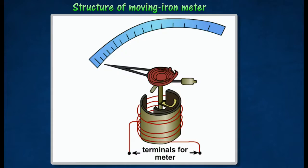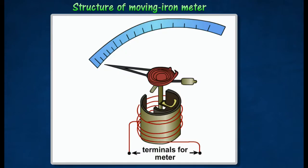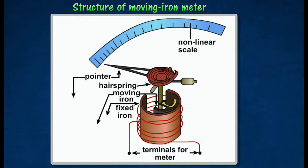The following diagram shows the basic structure of moving iron meter. The moving iron meter consists of a coil inside, which contains two soft iron circular bars. The larger bar is fixed. The smaller bar is attached to an axle pivoted on jeweled bearings.